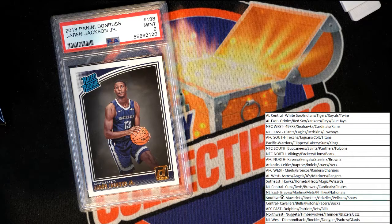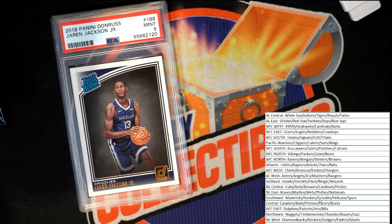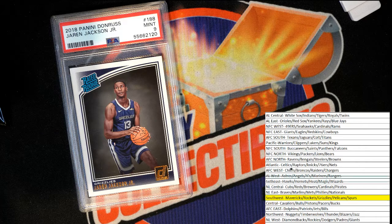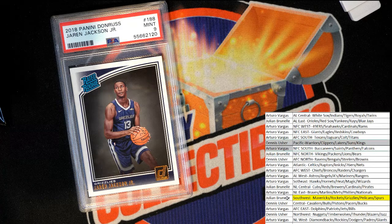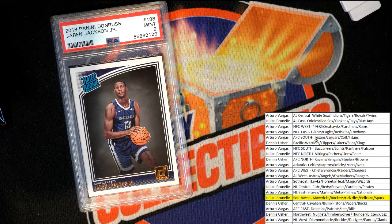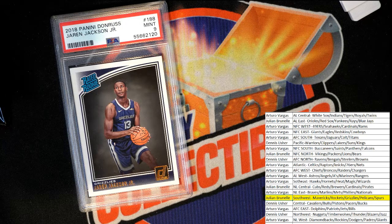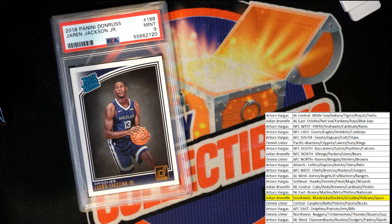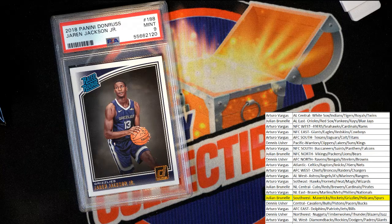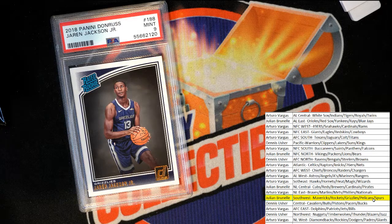That is this one right here. And who has that one? JB. JB has a graded rookie card of Jaren Jackson Jr. Congratulations JB, nice one.